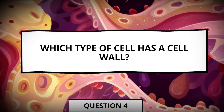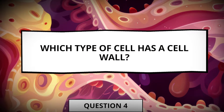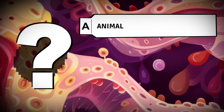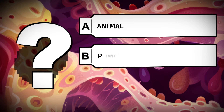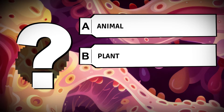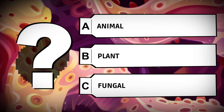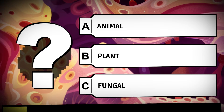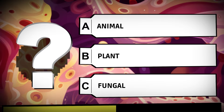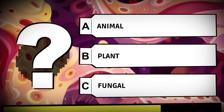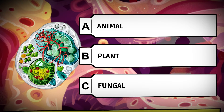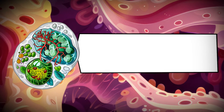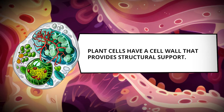Which type of cell has a cell wall? Animal. Plant. Fungal. Plant cells have a cell wall that provides structural support.